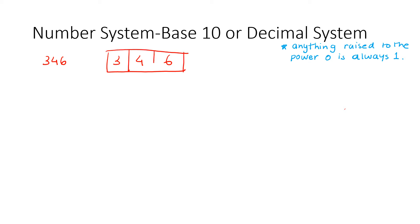And now, I'm going to break this further. So, to get 6, we have to do 6 into 1. To get 4, we have to do 4 into 10. And to get 3, we have to do 3 into 100. And the reason why I multiplied it by 1, 10, and 100 is because 6 is the unit place, 4 is the tenths place, and 3 is the hundredths place.